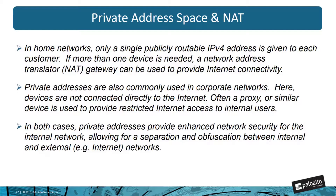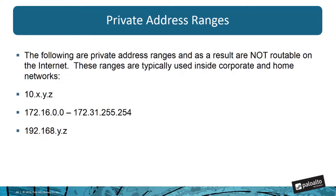It's a bit different between a large corporate network and what you might find at home. In both home and corporate networks, private addresses provide enhanced security for the internal network. They allow for the separation and obfuscation between internal and external or internet networks. The idea is that a private address, when it hits an internet router, would just be dropped — an internet router is not going to route these address ranges. The whole 10.x.y.z network range is not routable on the internet.